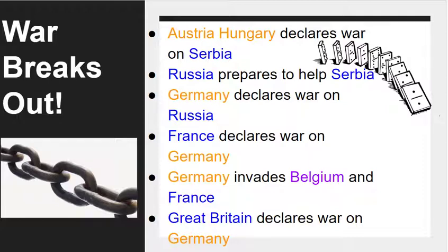Austria-Hungary sought revenge for the assassination of Archduke Franz Ferdinand — he was next in line, heir to the throne — and declared war on Serbia. Serbia was responsible for organizations such as the Black Hand, and Gavrilo Princip was the assassin. In response to Austria's declaration of war, Russia, Serbia's ally, began moving its army toward the Russian-Austrian border. Germany then declared war on Russia on August 1st.